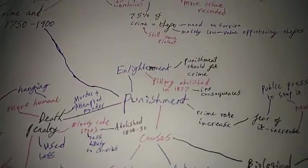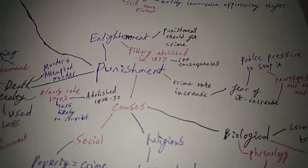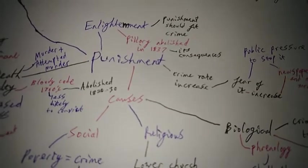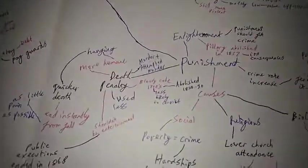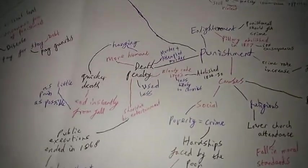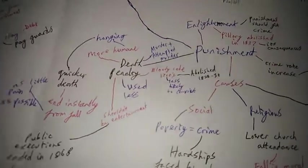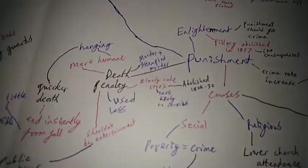The Enlightenment: people decided that punishment should fit the right crime. Due to this pillory was abolished in 1837 due to its consequences. Many people froze and died whilst in pillories which kind of takes away the whole humiliation aspect and makes it a lot more extreme. And basically the death penalty.